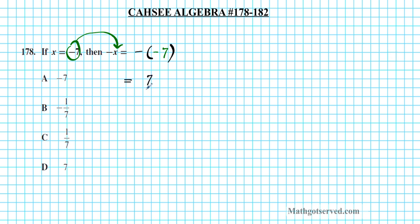For positive numbers you don't have to write the plus sign. So the final answer is positive 7, option letter D.